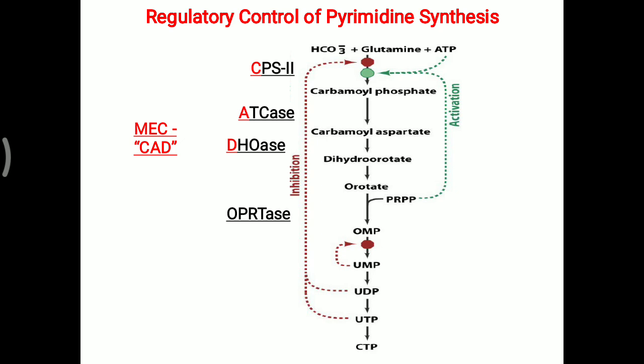OPRTS — that is orotate phosphoribosyl transferase — converts orotate into the OMP molecule, and OMP decarboxylase converts OMP into UMP. These two are also cytoplasmic enzymes.